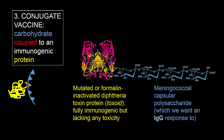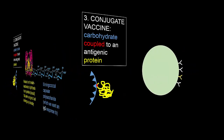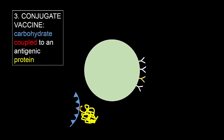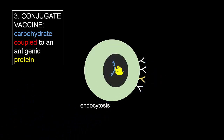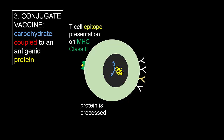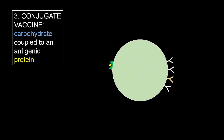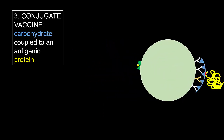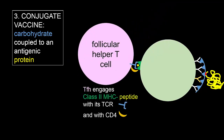We see a conjugate vaccine in which the capsular polysaccharide is chemically coupled to a highly immunogenic protein, commonly diphtheria toxoid. This B cell is specific for the carbohydrate antigen. It takes up the bound antigen along with the coupled protein. After lysosomal fusion, the protein is processed to peptides, some of which are loaded onto MHC class II molecules and move to the surface. The B cell is specific for the carbohydrate, but a follicular helper T cell comes along which is specific for the processed and presented diphtheria peptide.